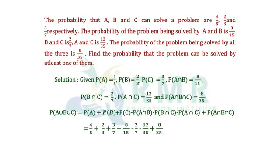Substituting the values: 4/5 + 2/3 + 3/7 − 8/15 − 2/7 − 12/35 + 8/35. After solving, we get 101/105.